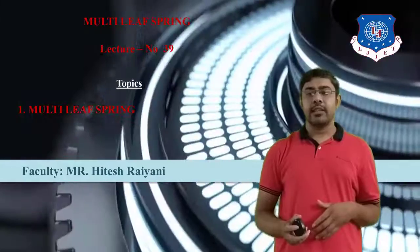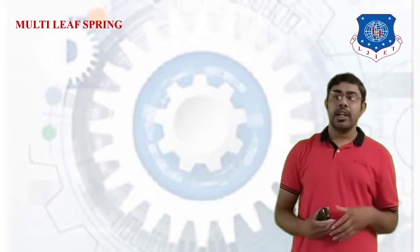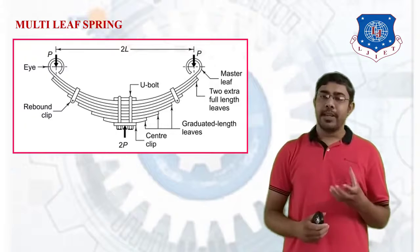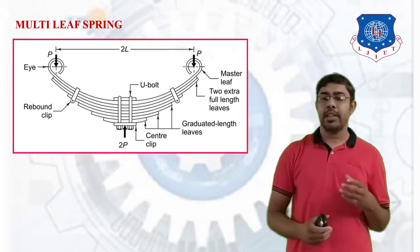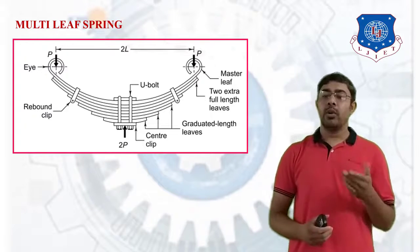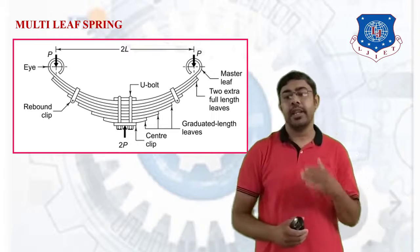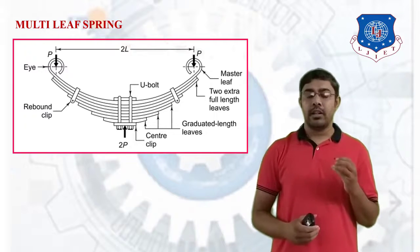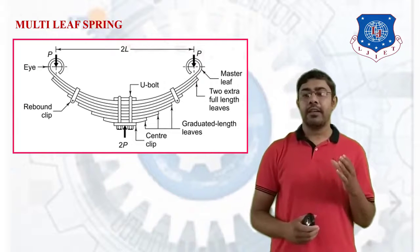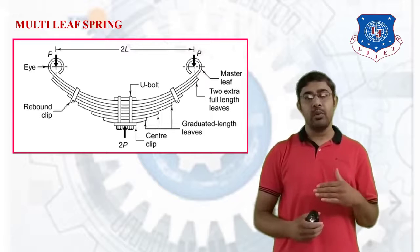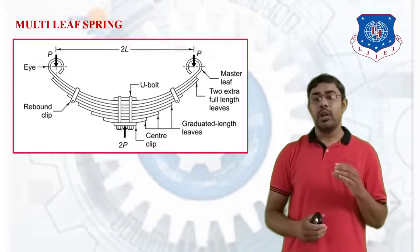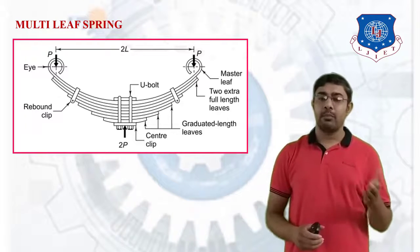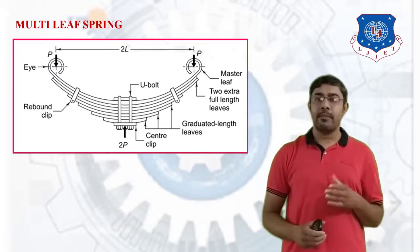Let's consider the multi leaf spring as shown here. This spring has multiple leaves and is known as the multi leaf spring. In this spring there is one master leaf, followed by two extra full length leaves, and then graduated length leaves. All these leaves are combined and clamped by center clips and rebound clips at both ends. This is the structure of multi leaf springs.